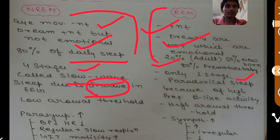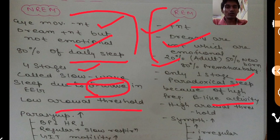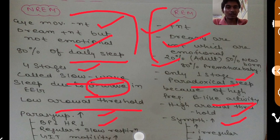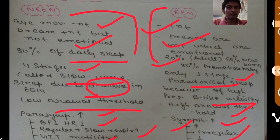NREM is also called slow-wave sleep due to the presence of delta waves, whereas REM sleep is called paradoxical sleep because of its high-frequency beta-like activity. NREM sleep is light sleep with a low arousal threshold, whereas REM sleep is deep sleep with a high arousal threshold. In NREM sleep, parasympathetic activity is increased — decreasing blood pressure, heart rate, and respiration — whereas in REM sleep, sympathetic activity is increased, raising BP and heart rate with irregular respiration.